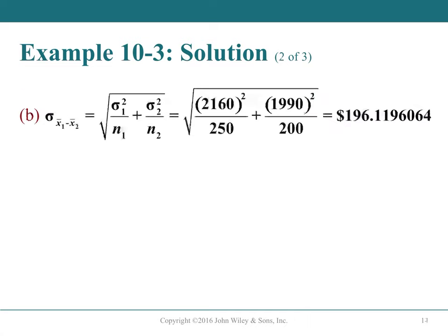The standard error is calculated as a weighted combination: √(σ₁²/n₁ + σ₂²/n₂), yielding approximately $196.12. Carrying more decimal places provides greater accuracy; rounding to the nearest ten dollars would be excessive.